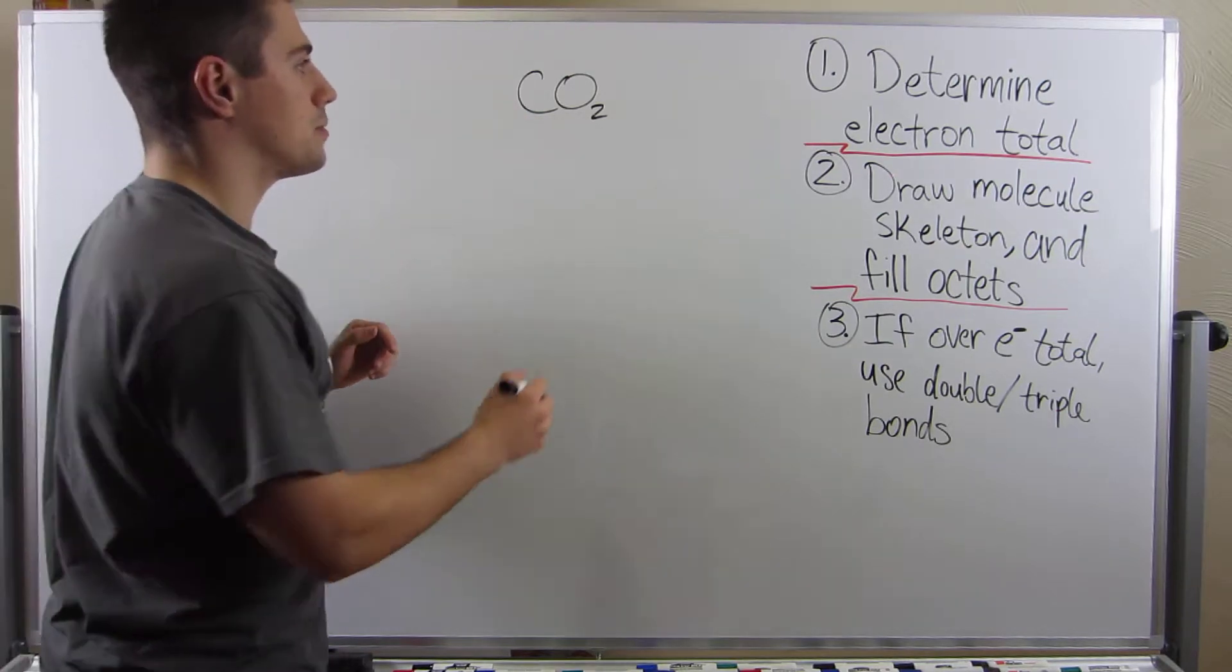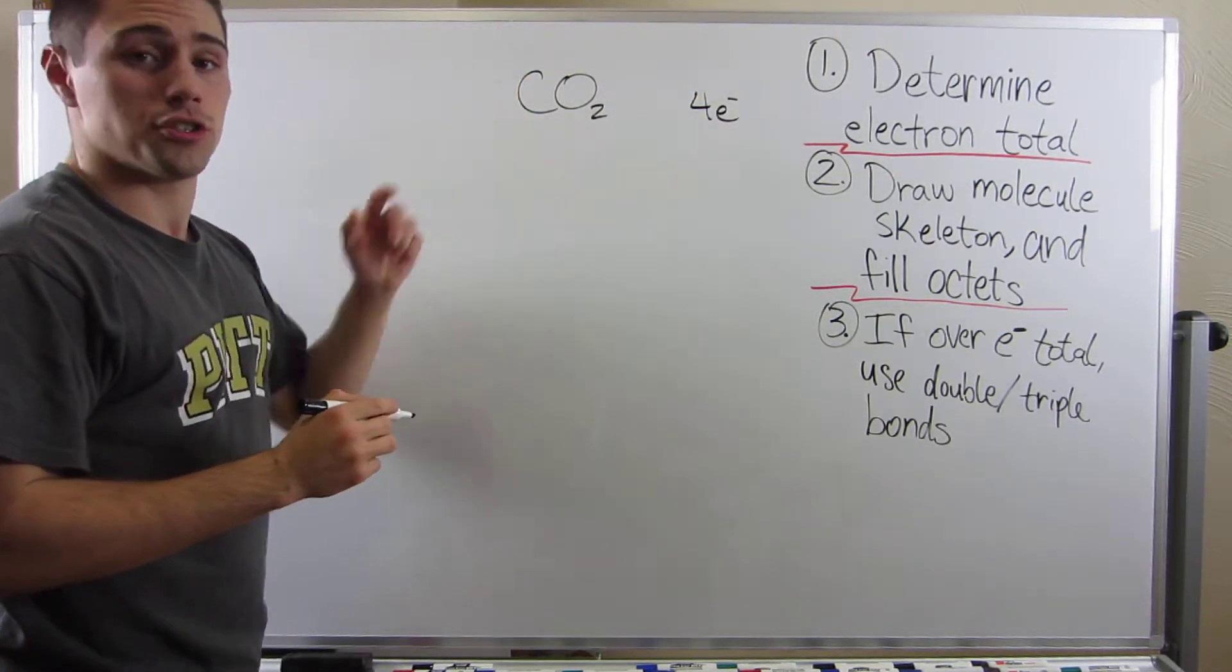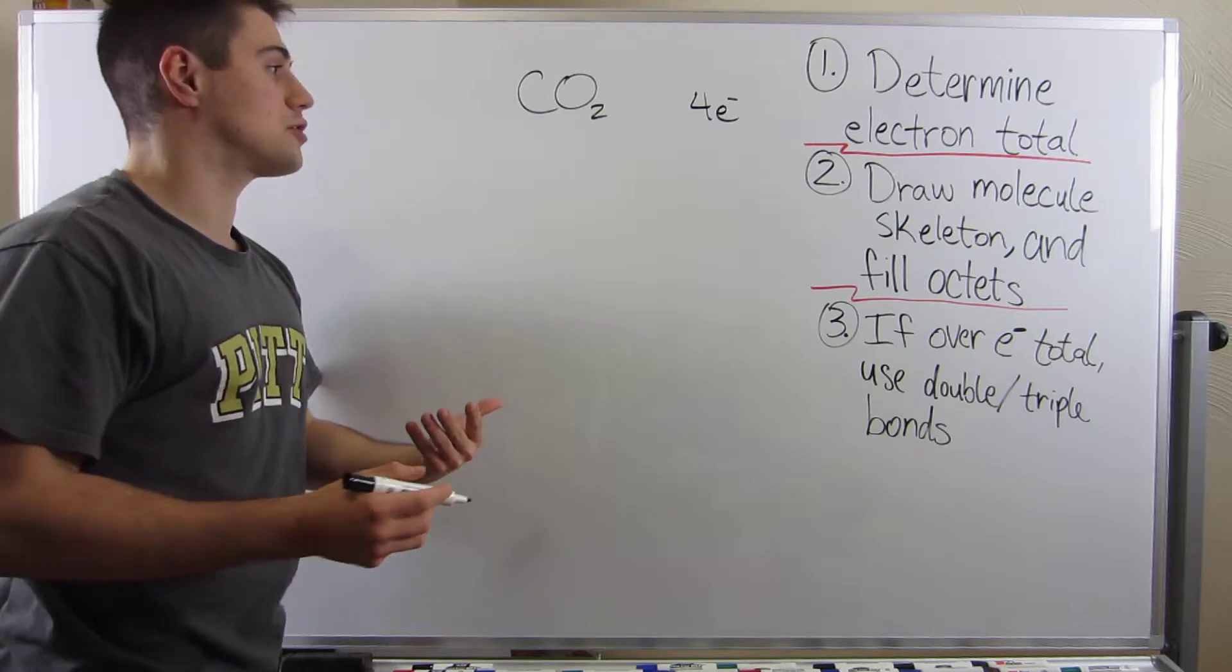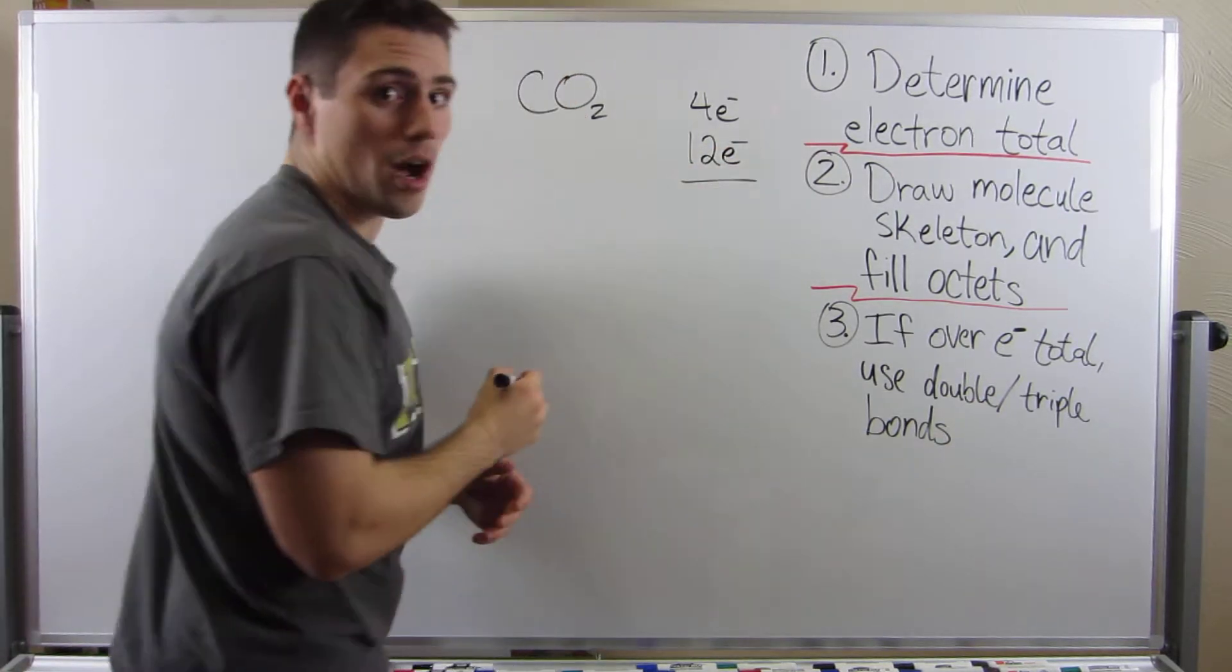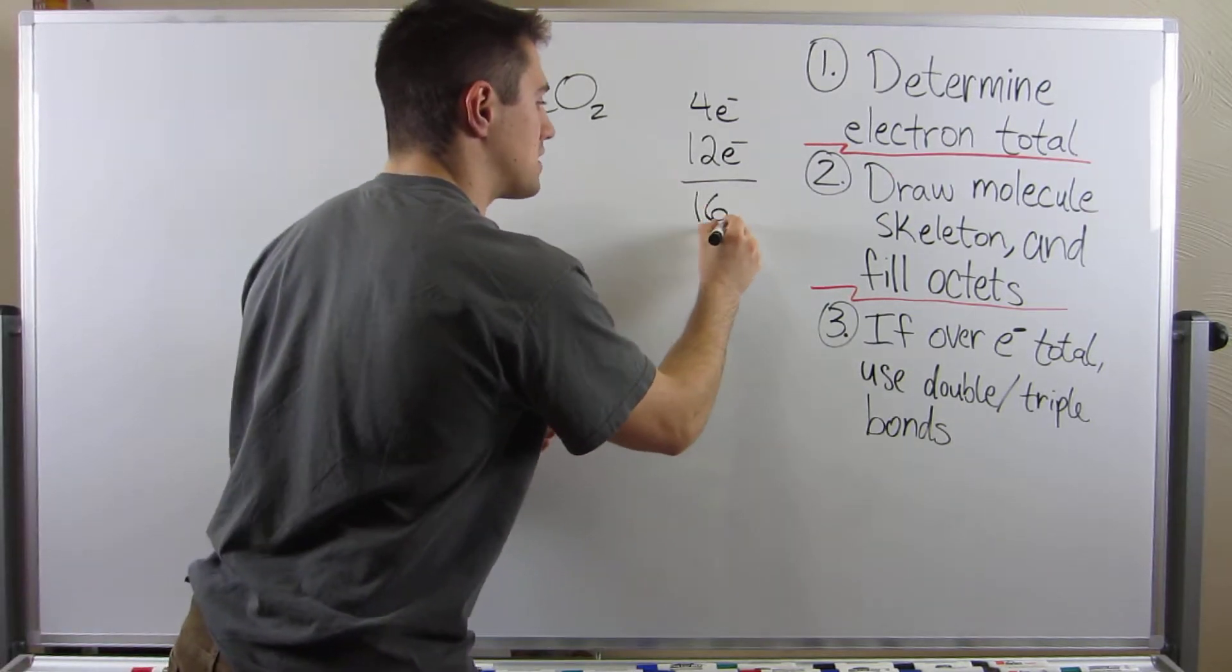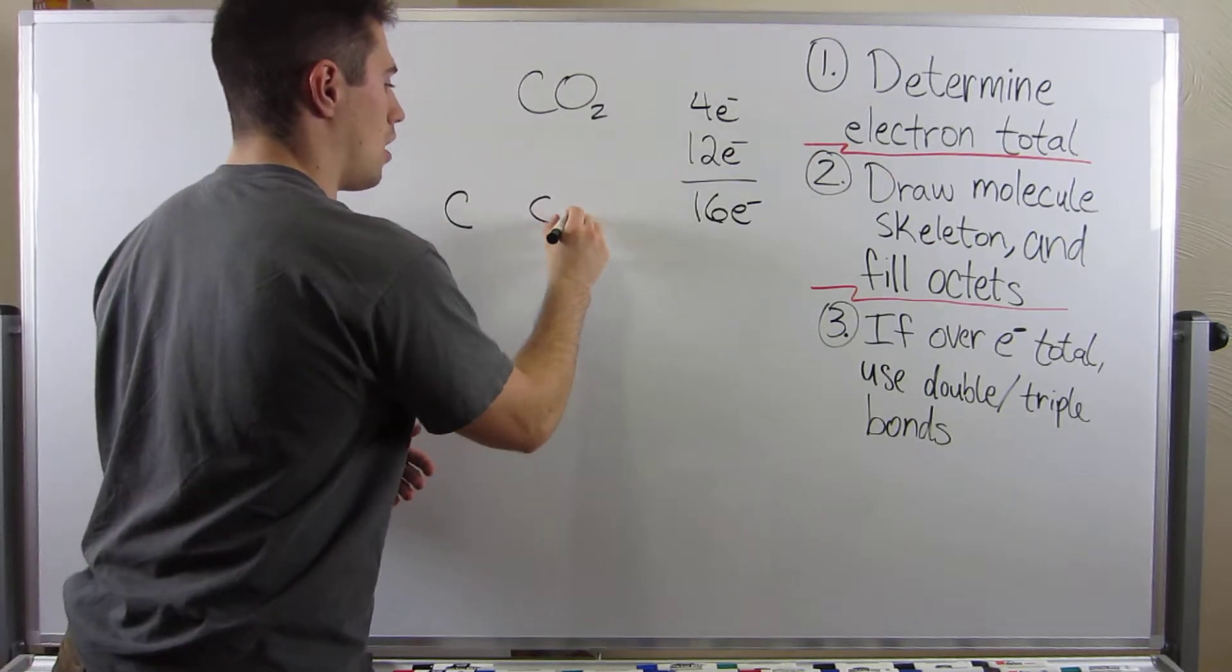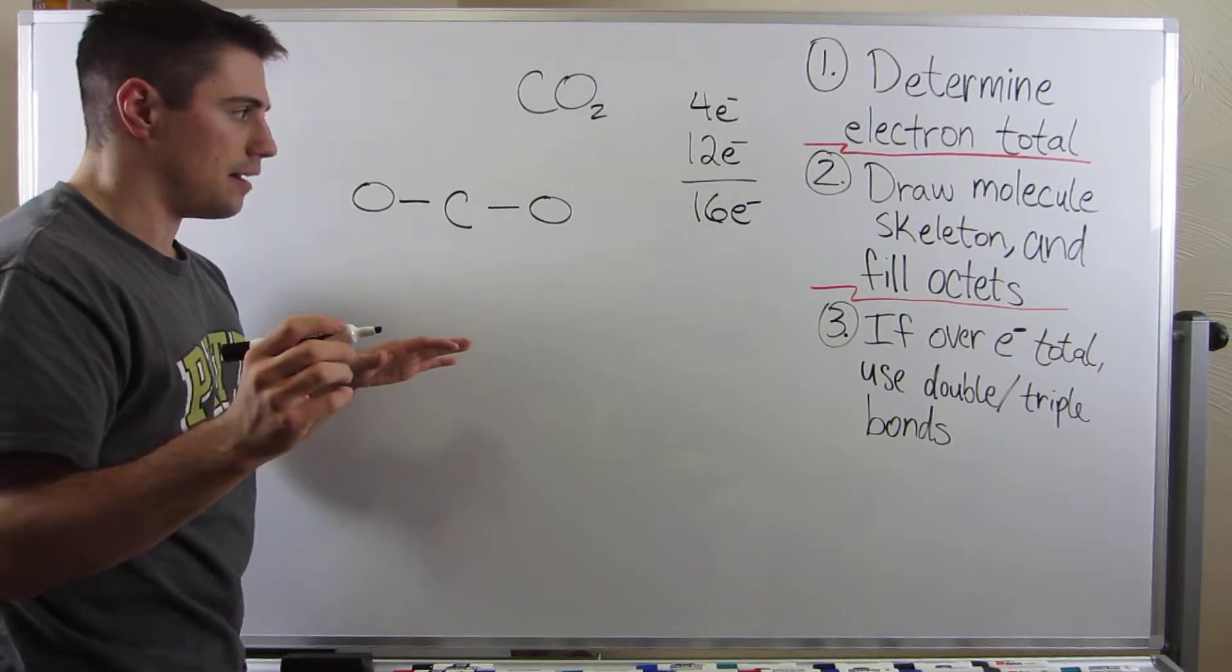Let's figure out our total number of electrons. Step number one. Four electrons from carbon. On the periodic table, oxygen is in the sixth column, so he'll bring six electrons to the table, multiply it by two because we have two oxygens. That means 12 electrons contributed from oxygen. Add that total up, we have 16 electrons. Now I'm going to draw my skeleton. Oxygen on one side, oxygen on the other side, and now I'm going to just fill everybody's octet.